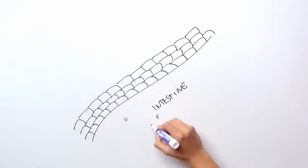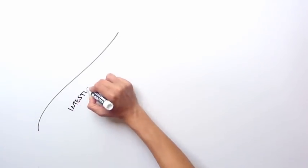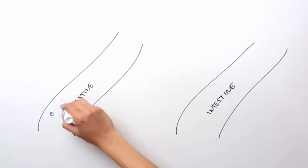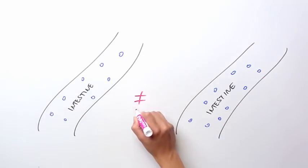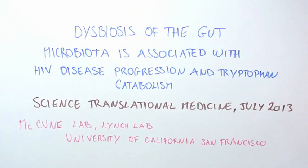The types of bacteria that live in our gut influence how healthy the immune barrier is. So the scientists of this paper were interested in seeing if there were any differences in the types of bacteria that reside in the gut of patients with and without HIV. Their findings are published in Science Translational Medicine in July 2013 in their article titled Dysbiosis of the Gut Microbiota is Associated with HIV Disease Progression and Tryptophan Catabolism.